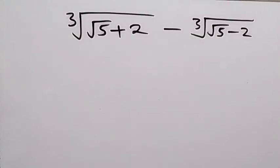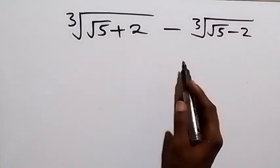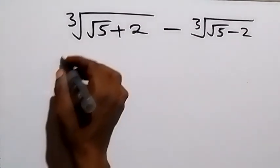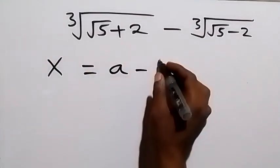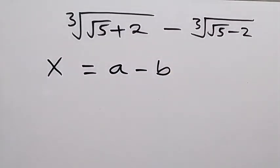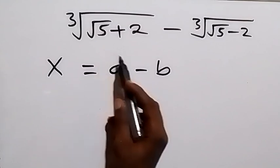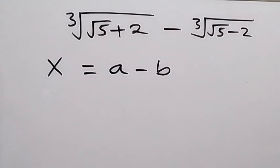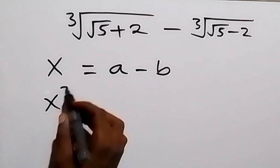Hello, you are welcome. We want to simplify the cube root of (√5 + 2) minus the cube root of (√5 − 2). Let's represent this expression as x, which equals a minus b, where a is the cube root of (√5 + 2) and b is the cube root of (√5 − 2).